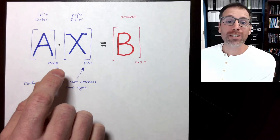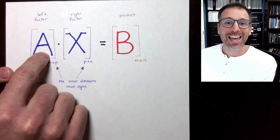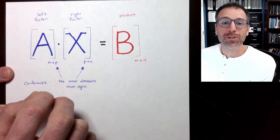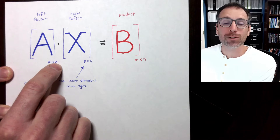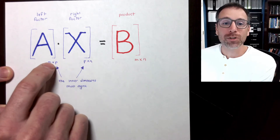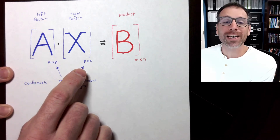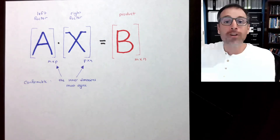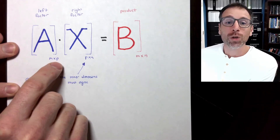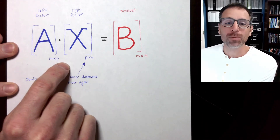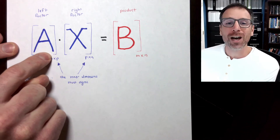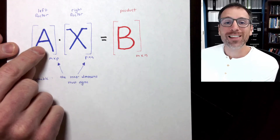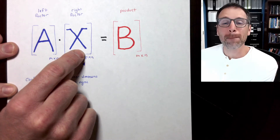As in matrix-vector multiplication, when multiplying A on the right by X, we have special conditions on the dimensions. If A is an M by P matrix and X is a P by N matrix — where M, P, and N are all non-negative integers — notice that the inner dimensions must agree. The number of columns of A must match the number of rows of X. When that happens, we say that A is conformable to right matrix multiplication by X.